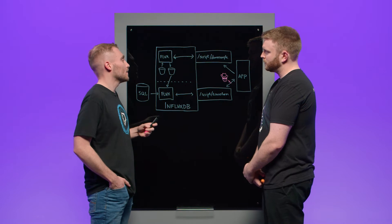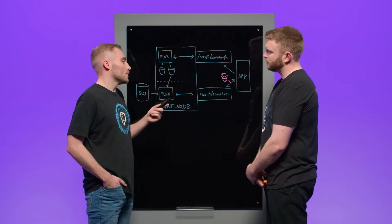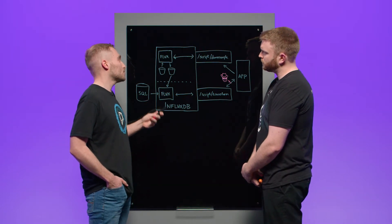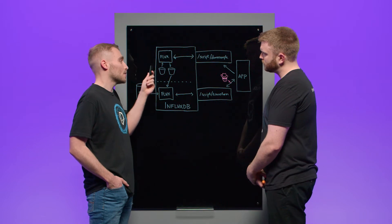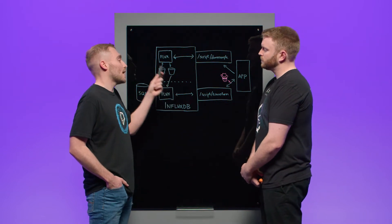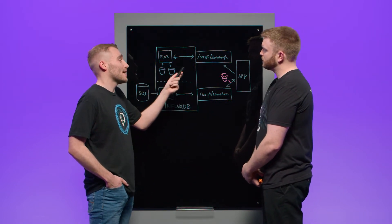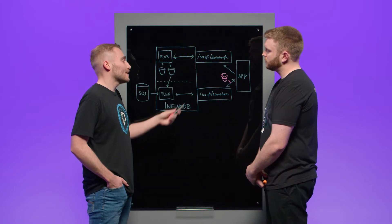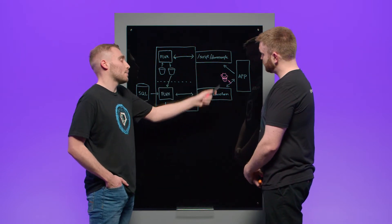So Jay, let's start with the basics. Tell us what a custom InfluxDB endpoint is. Well, Influx Data has this awesome new feature called API Invocable Scripts, and this is for Influx Data Cloud. So let's take a look at it. Essentially what we're doing is allowing developers to create custom Flux scripts and assign them to API endpoints that they make and define themselves. This allows them to call them via their own application.